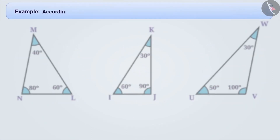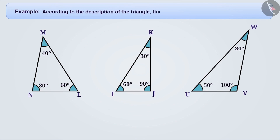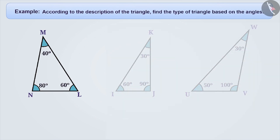Next example: according to the description provided for the triangle, identify the triangle on the basis of angles. From the description provided for triangle LMN, we understand that angle L, angle M, and angle N of the triangle are all smaller than a right angle, that is 90 degrees. Therefore, we will call this triangle an acute angle triangle.